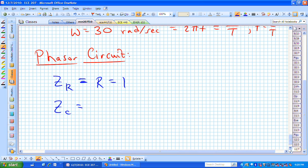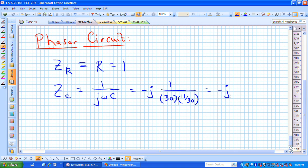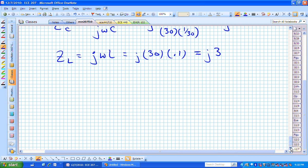Z sub c, the impedance of a capacitor is one over j omega c. That's equivalent to minus j. Omega is 30. And what was c? Conveniently it was one over 30. This is now minus j for z sub c. The inductor's impedance was j omega l. Omega again was 30. L was a tenth. That's now j3.